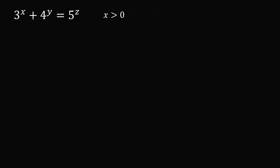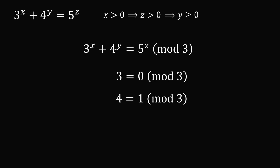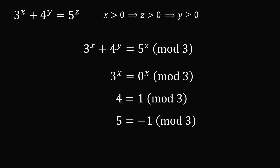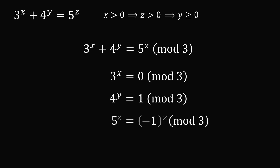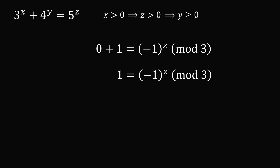If x is greater than 0, that implies z is greater than 0, which means that y is greater than or equal to 0. We'll analyze the equation modulo 3. 3 is equal to 0 mod 3, 4 is equal to 1 mod 3, and 5 is equal to negative 1 mod 3. We'll raise these to the respective powers of x, y, and z, substitute into the first equation, and upon simplification we can see that z has to be an even number.